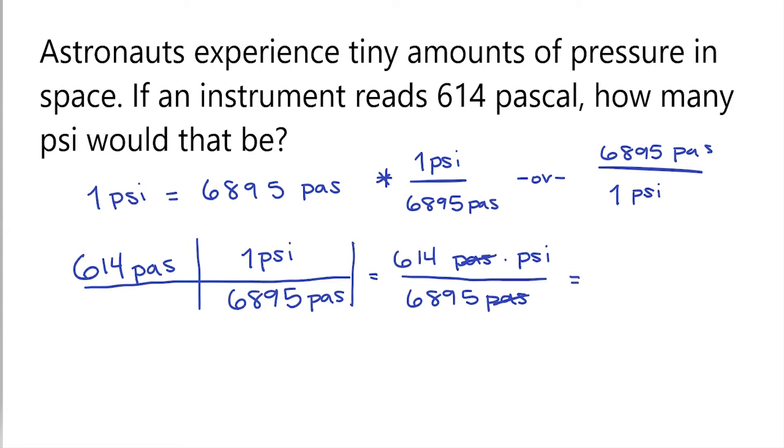So now 614 divided by 6,895 is going to be 0.891 PSI. So now we know that 614 Pascal is going to be equal to 0.891 PSI. And that is how you convert from Pascal to PSI.